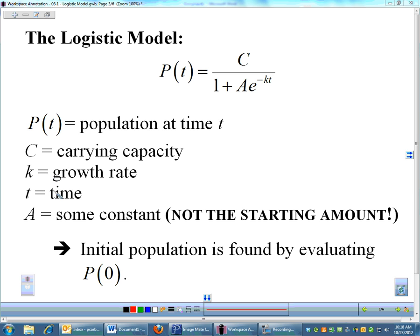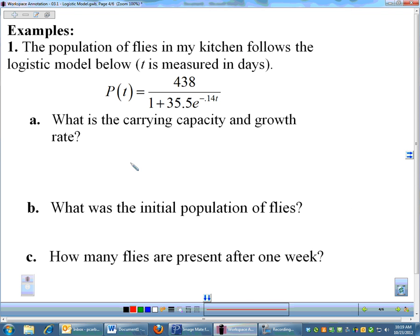C is the carrying capacity, and that's going to be given to you. Pretty much the entire formula will be given—you're just going to have to use it to answer different questions. A lot of it's the same. T is still time. I used K instead of R, but K is the growth rate. A is just a constant. The main difference is your initial amount is not found in the formula. To find the initial population, you have to plug in 0 for T, which is the same as finding P of 0.